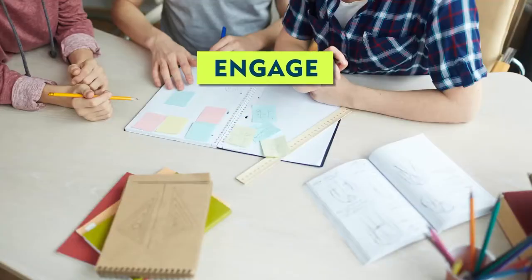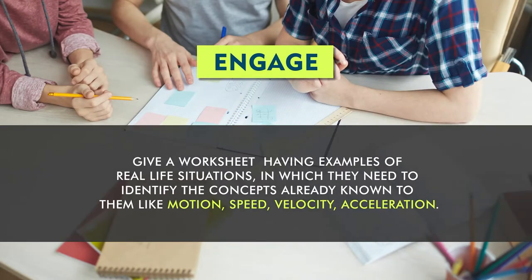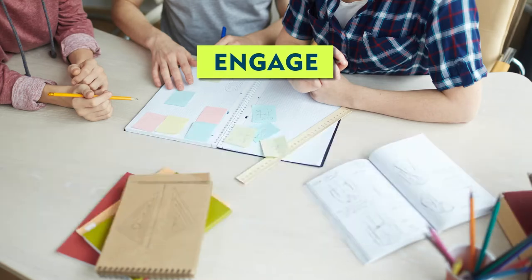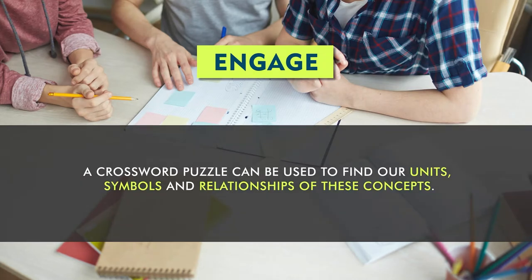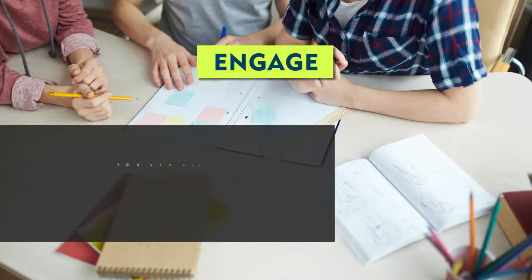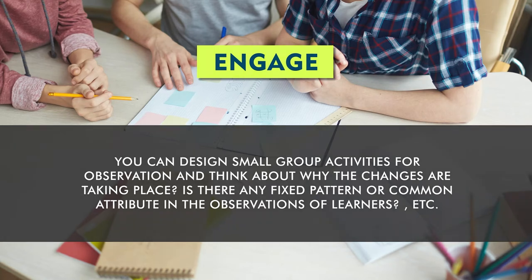My suggestion is to give them a worksheet with examples from real-life situations where they need to identify the concept being discussed — whether it is motion, speed, velocity, or acceleration. You can also develop a crossword puzzle where students find the units, symbols, and relationships between different concepts like motion, speed, velocity, and acceleration. You can also design small group activities for observation purposes and let learners think about why those changes are taking place.